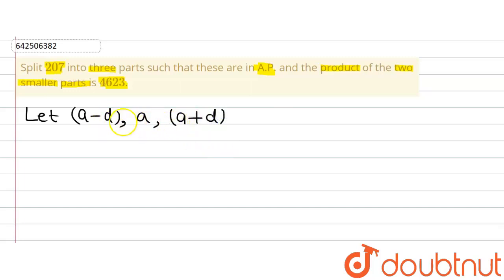Now, this is an AP because if you find out the common difference, for example, A minus A minus D, second term minus first term will give us the common difference D because A minus A will get cancelled out, minus minus plus. So the common difference is D.